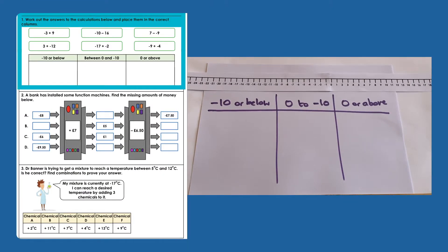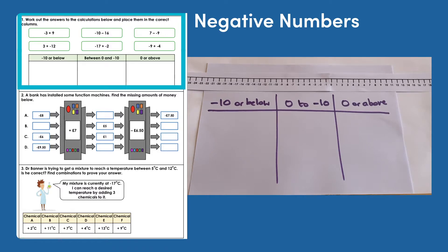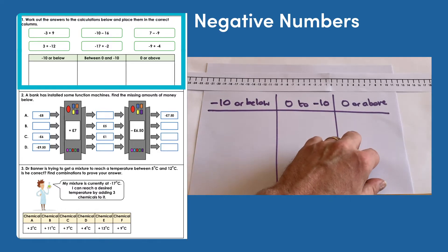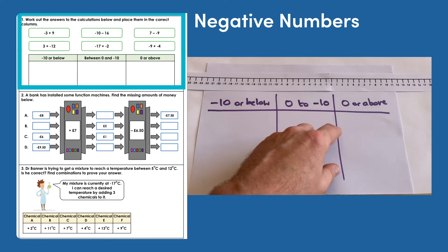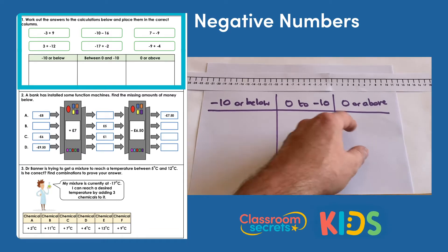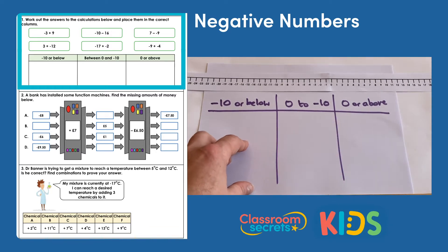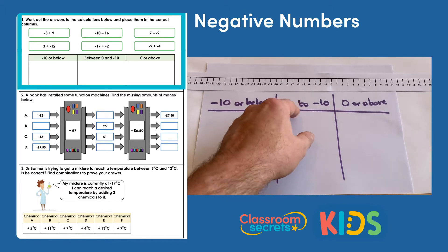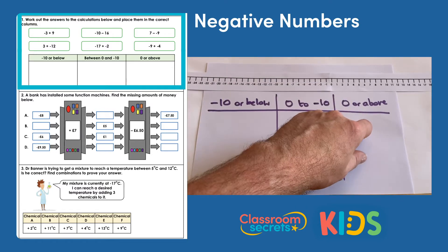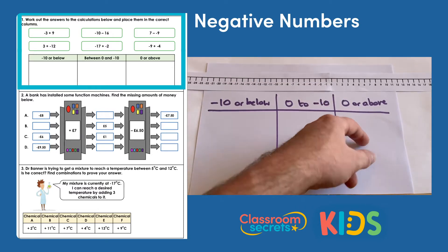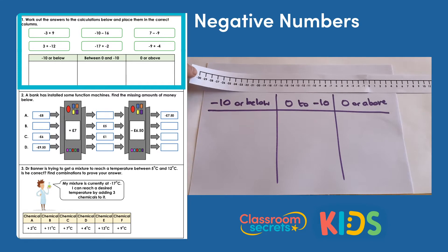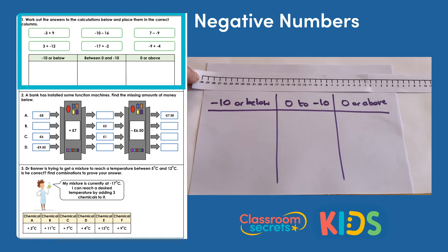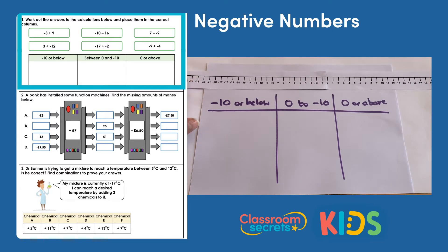Question one says work out the answers to the calculations below and place them in the correct columns. We've got six calculations and three columns. We're looking to place the calculations in the correct column depending on the result: negative 10 or below, zero to negative 10, or zero or above. I've got a number line printed out that goes from negative 30 up to 20 to refer to.